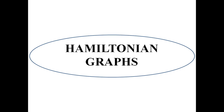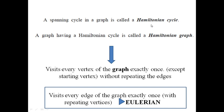Dear guys, let's see today Hamiltonian graphs. A spanning cycle in a graph is called a Hamiltonian cycle. A graph which contains this Hamiltonian cycle is called a Hamiltonian graph.